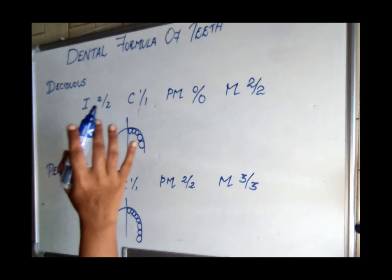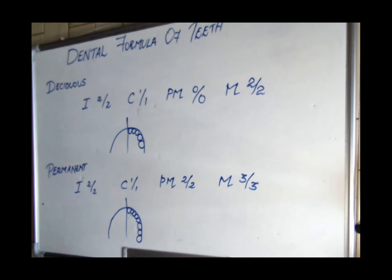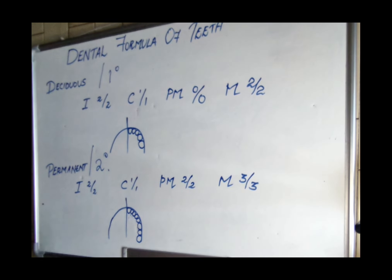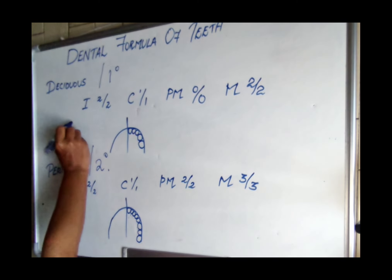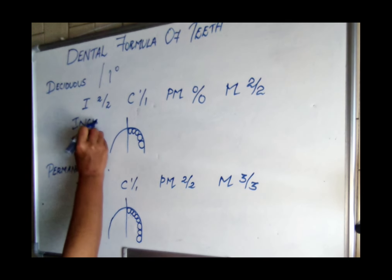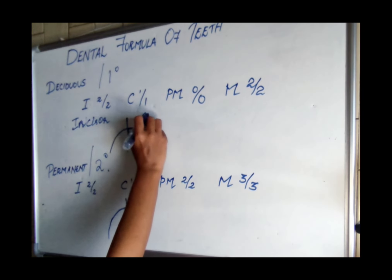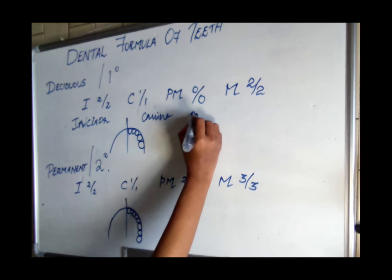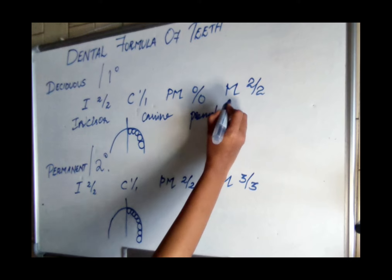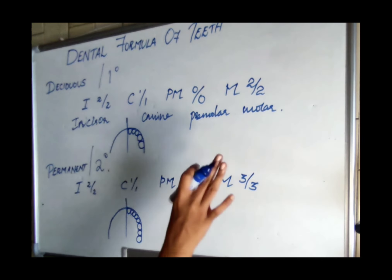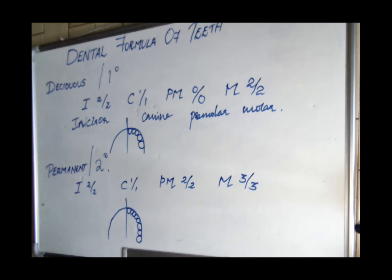The dental formula denotes the number of teeth present in each dentition. We have a dental formula for deciduous (primary) dentition and one for permanent (secondary) dentition. In the formula, I denotes incisor, C for canine, PM for premolar, and M for molar. These are the four types of teeth present in our dentition.